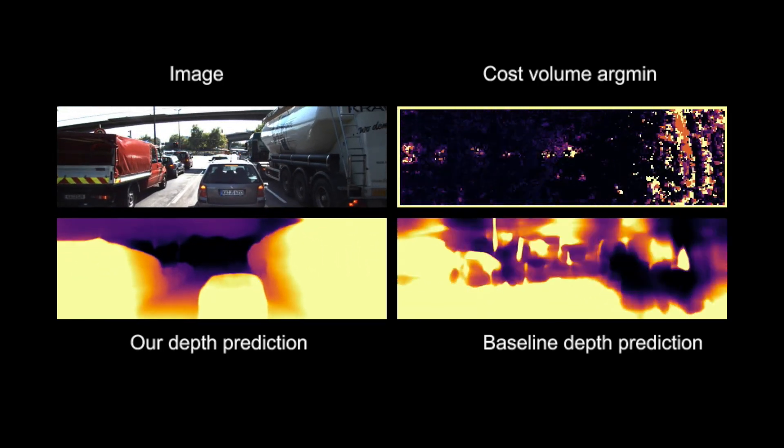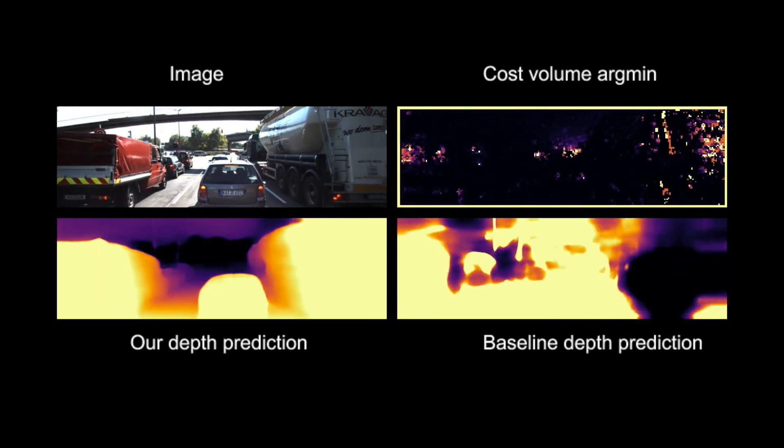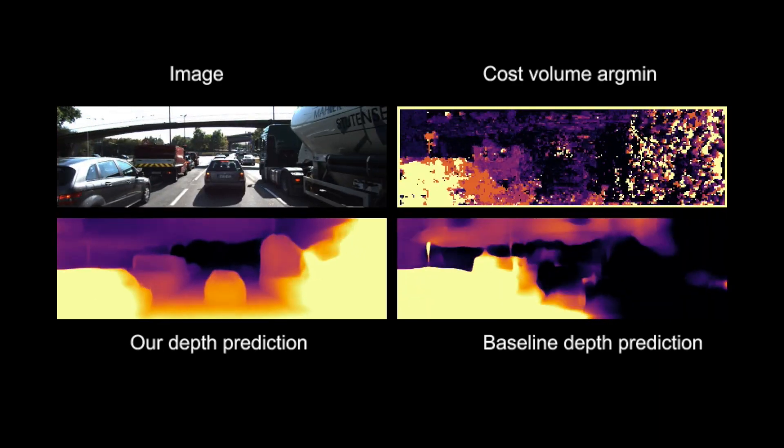Additionally, our full method can handle cases where there is no or very little camera motion shown here. In these cases, the cost volume is unhelpful, and our baseline model produces very poor disparity estimates.